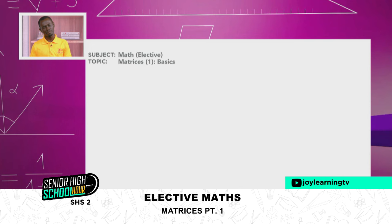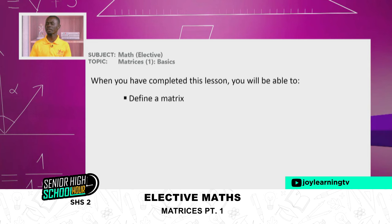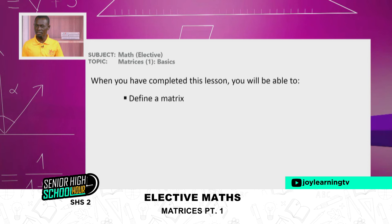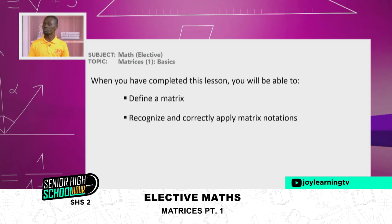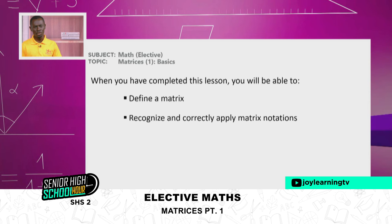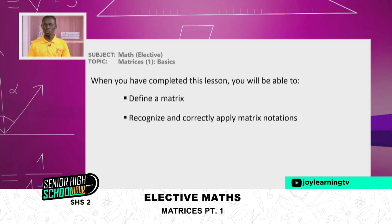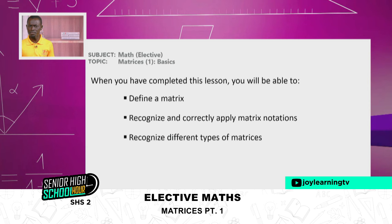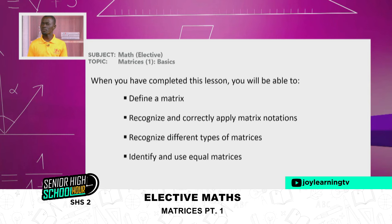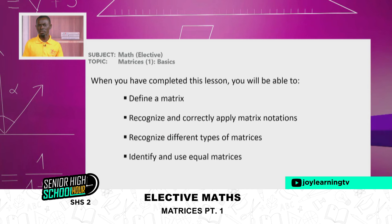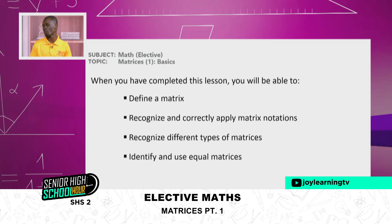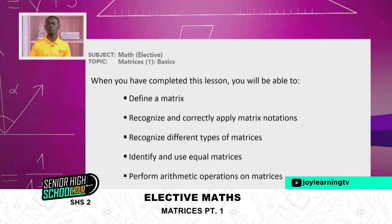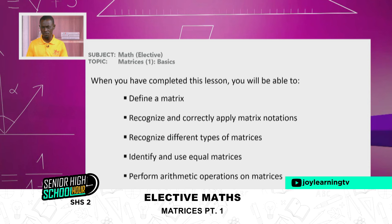A few objectives we have on our minds. When we would have completed this topic, you should be able to do a few things. First, you should be able to define what a matrix is. You should be able to recognize and correctly apply matrix notations — mathematics, we love notations, indeed it's our language. You should be able to recognize different types of matrices, and identify and use equal matrices. And finally, you should be able to perform very basic arithmetic operations on matrices. So, let's begin.